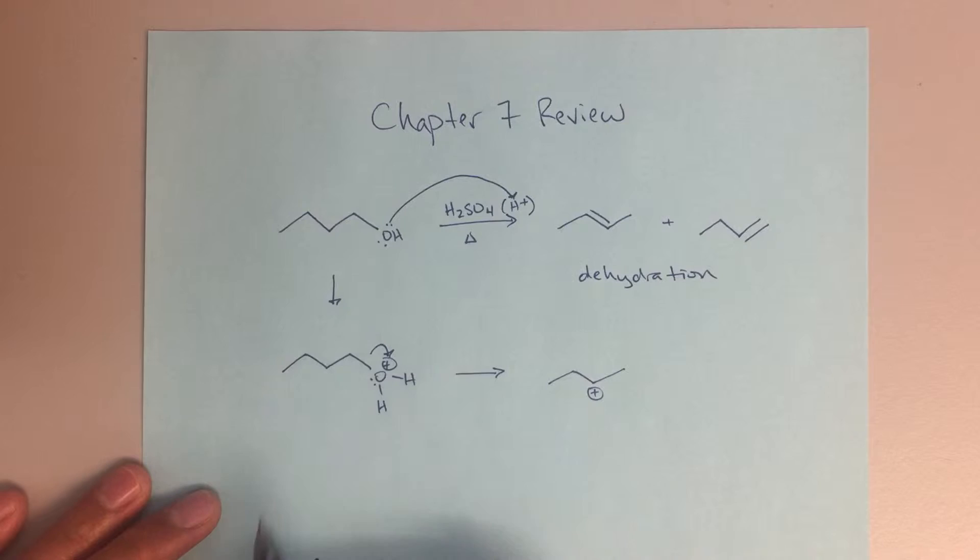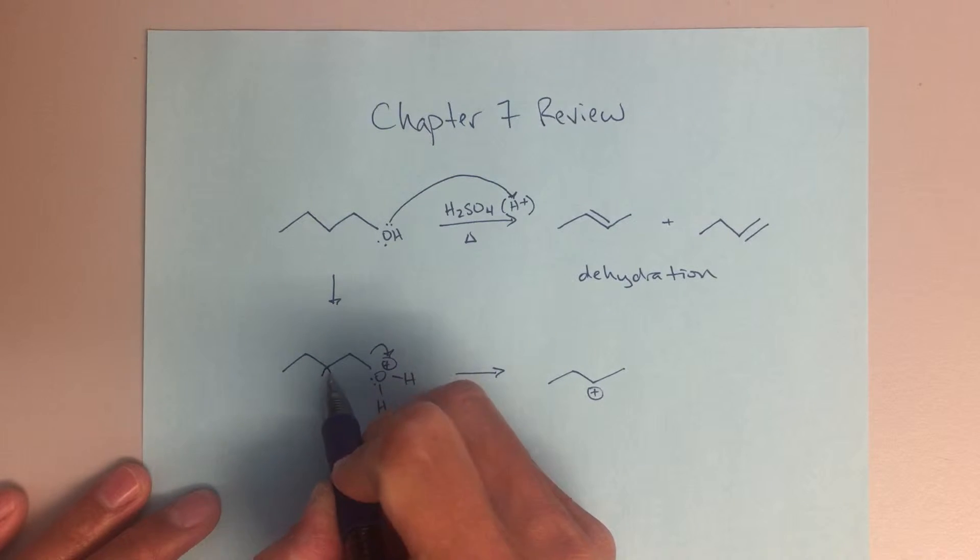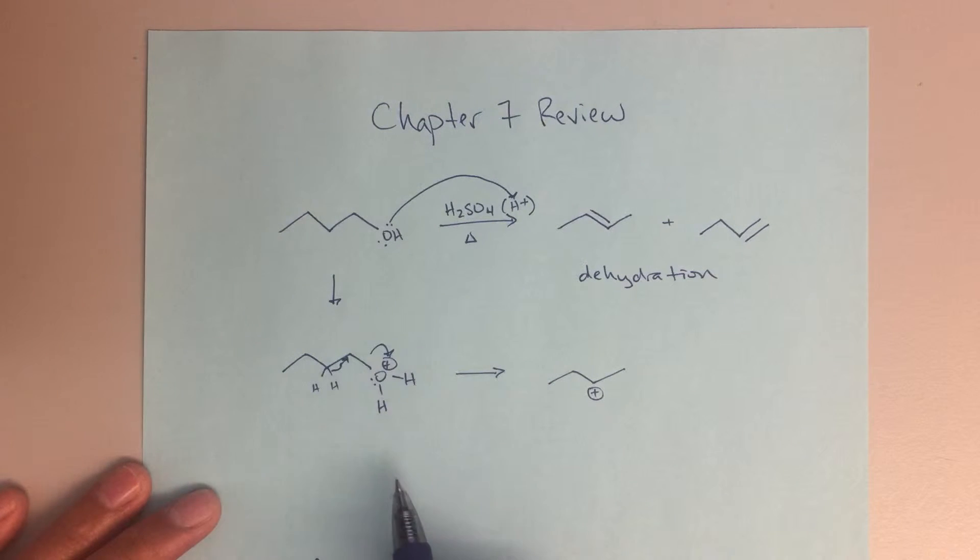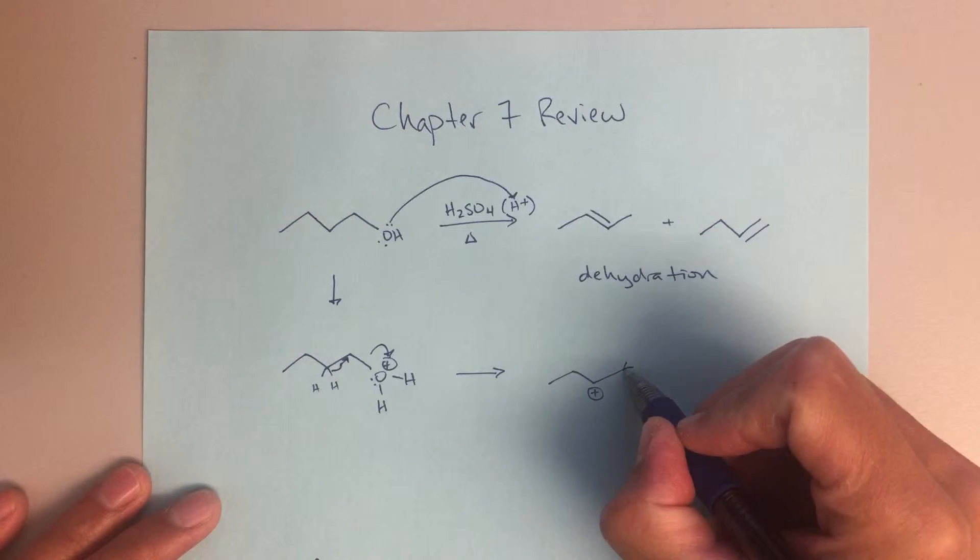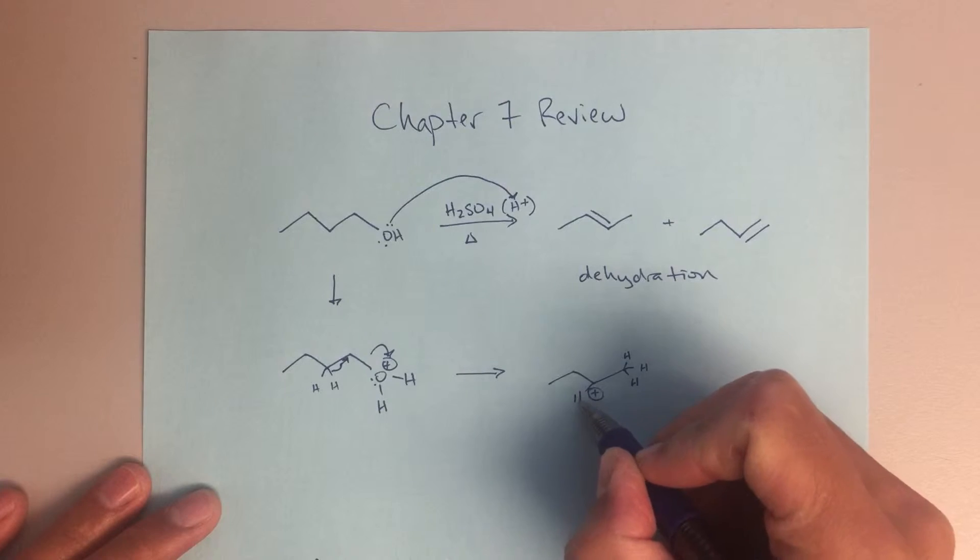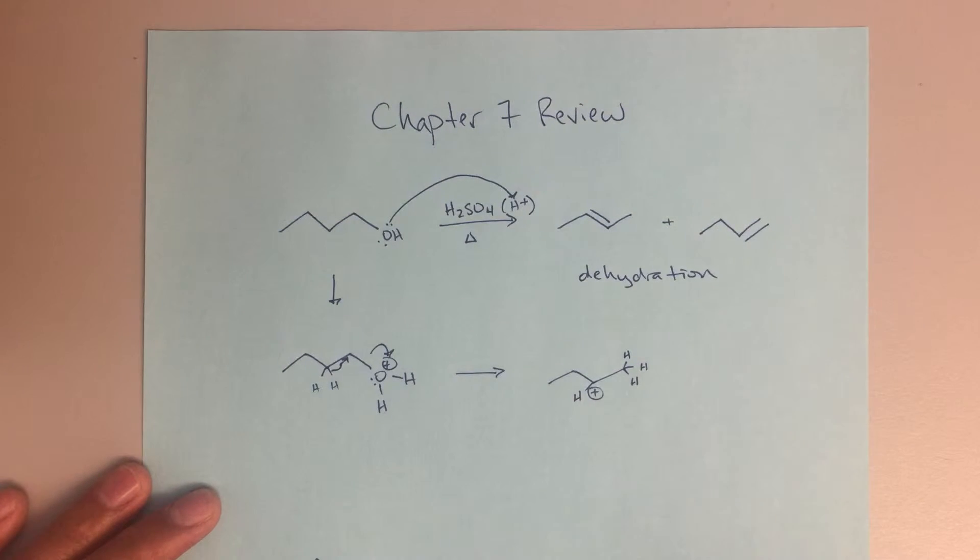So this primary carbocation, that's not something that really exists, we're not ever going to observe that in solution. So what I would sort of prefer to do is show that hydride shift, so that arrow is supposed to be going directly to that carbon, so shifting that hydrogen over there with these electrons over here, to end up with, let's just put those hydrogens in there for clarity, to end up with this carbocation.